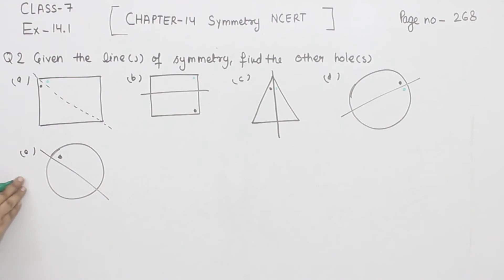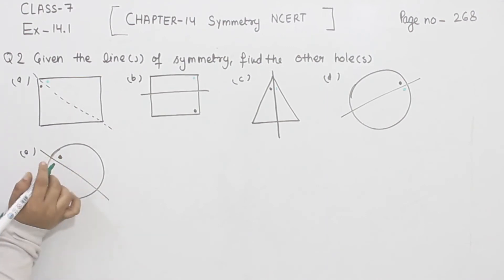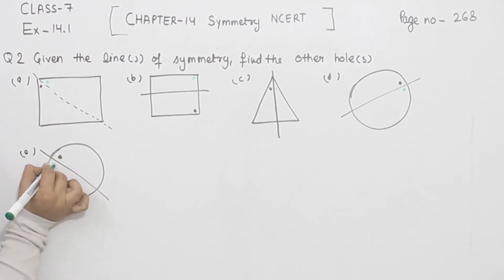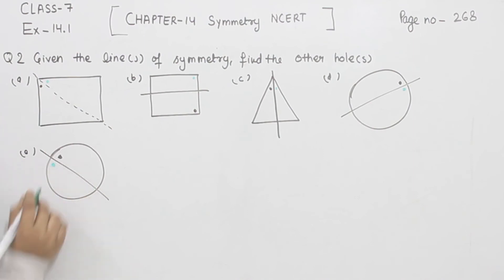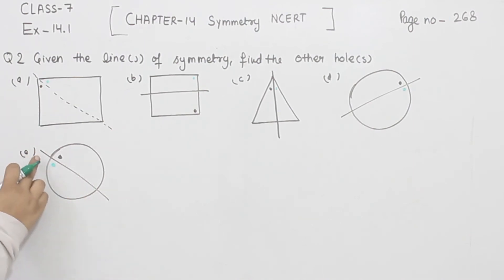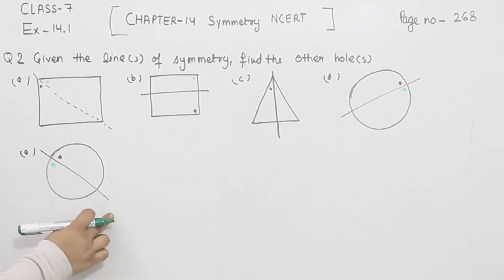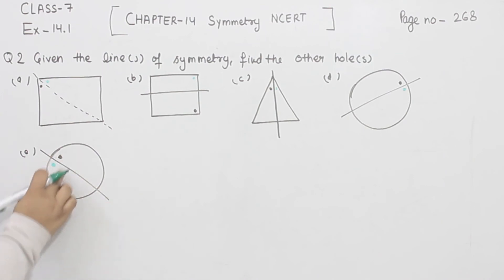Now comes part E. This is part E. Now one of the holes is here, so the other hole will be on this side. We can draw the line of symmetry, and both the holes come on the surface of each other.